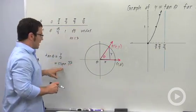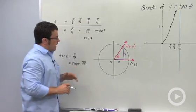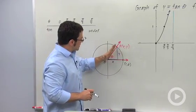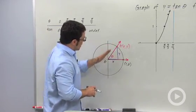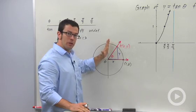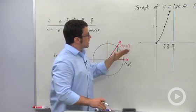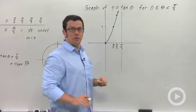And the reason for that is, again, it comes back to slope. As this angle gets closer and closer to π/2, the slope of this line gets steeper and steeper. It's approaching infinity. And that's why the tangent zooms off to infinity.